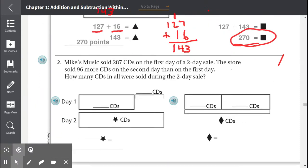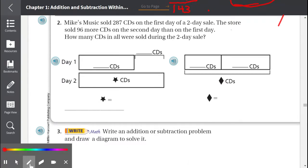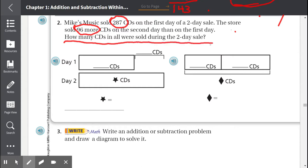Number 2. Mike's Music sold 287 CDs on the first day of a two-day sale. The store sold 96 more CDs on the second day than on the first day. How many CDs in all were sold during the two-day sale? Let's circle our keywords and important numbers. 287 CDs were sold on the first day. On the second day, they sold 96 more CDs than they did on the first day. We underline our question because it tells us what to find. We have a keyword, in all. In all tells us we have to add.